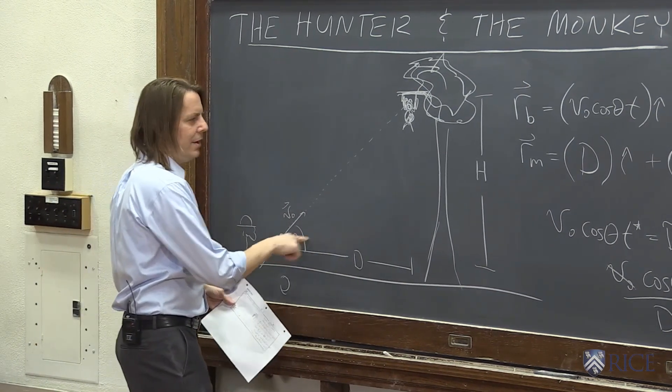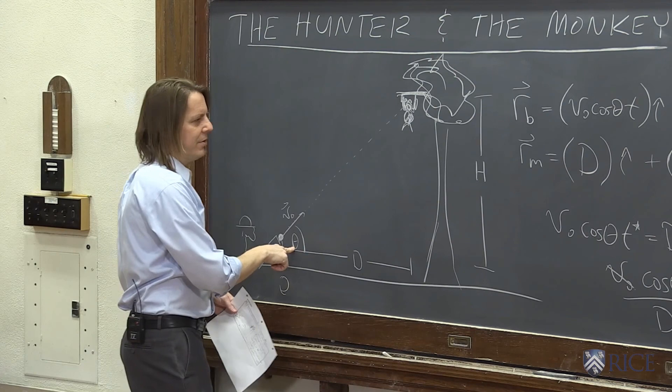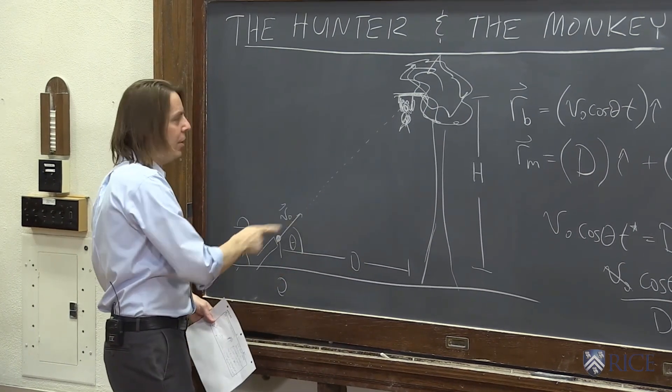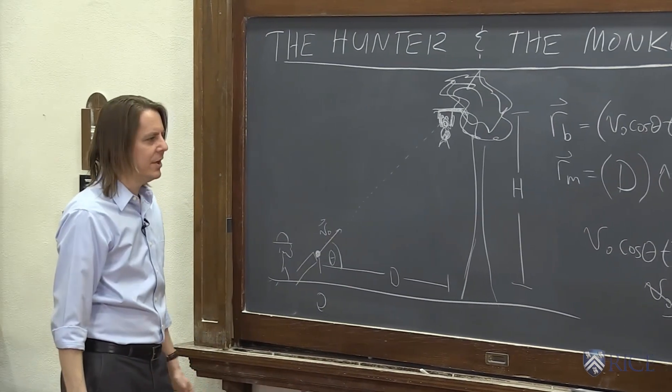Look at this triangle right here. Here's theta, here's H and here's D. What's the tangent of theta? H over D. This is the condition you need for the hunter to be aimed right at the monkey, is that the tangent theta equals H over D.